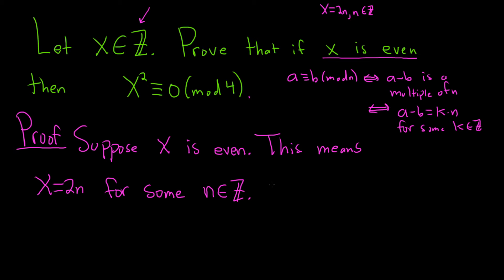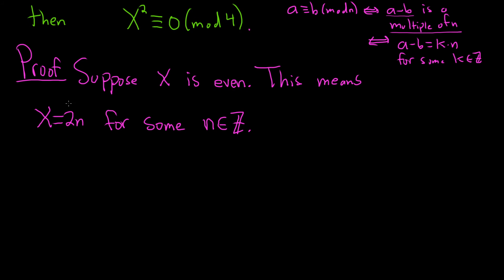Now we've pretty much exhausted what we have with our hypothesis. So let's go ahead and try to show that x squared is congruent to 0 modulo 4. In order to do that, we'll show that x squared minus 0 is a multiple of 4, because that's what it would mean. See here it says a minus b is a multiple of n. So here it would mean x squared minus 0 is a multiple of 4. So let's write down x squared minus 0.